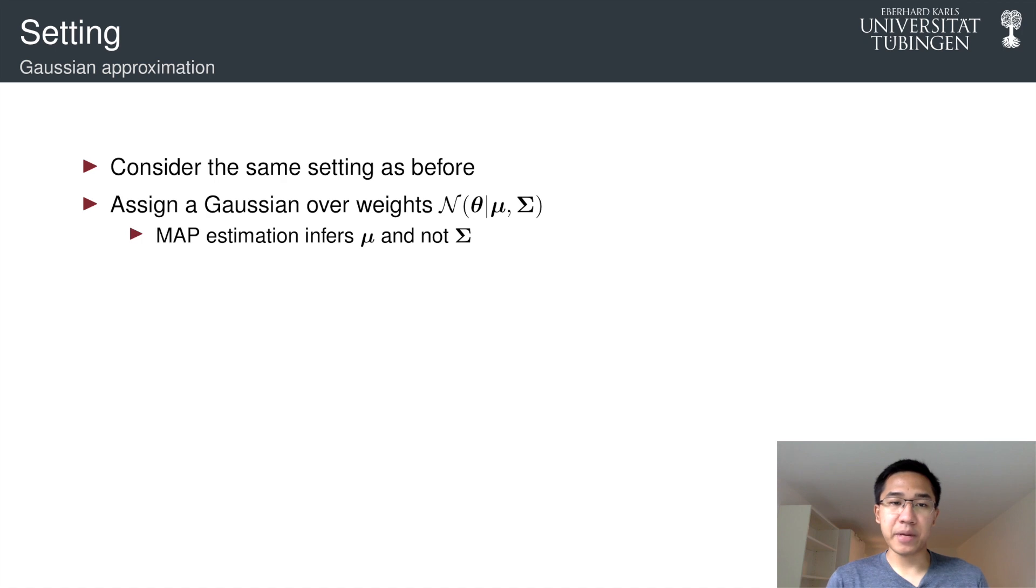So really, the previous analysis is just a special case, because we can assume that point estimate, the MAP estimation, actually infers just the mean of this distribution and not the covariance Σ. So really, the only difference here is that we have an additional structure in the form of the covariance Σ.